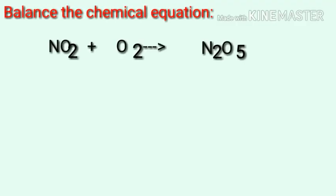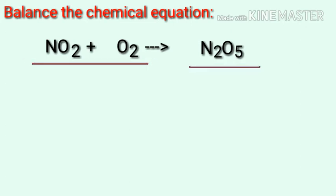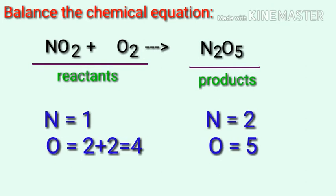Balance the chemical equation. Let's take a look at this equation representing the chemical reaction. In this equation, the reactants are nitrogen dioxide and oxygen, and the product is dinitrogen pentoxide.